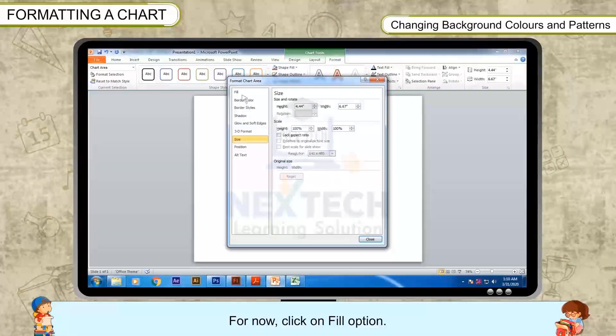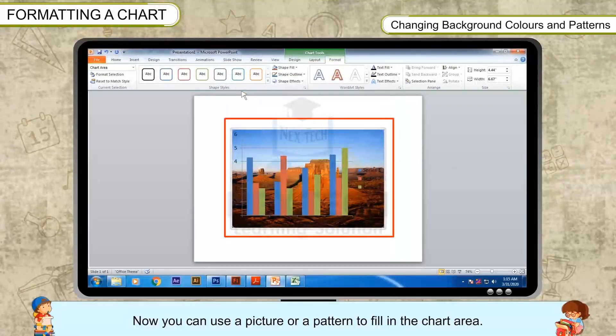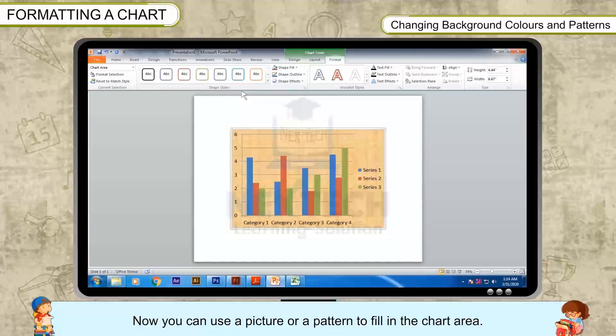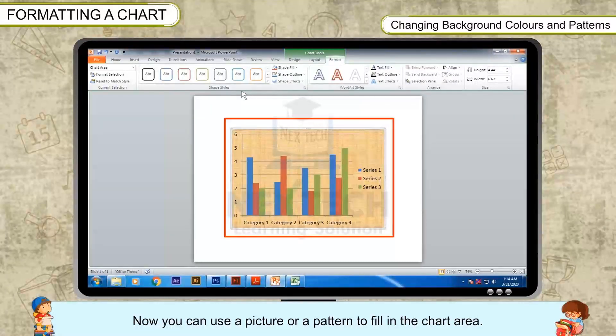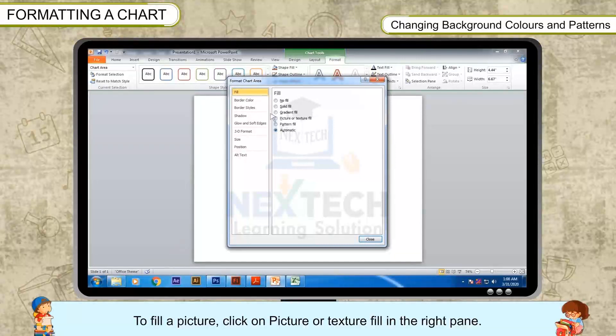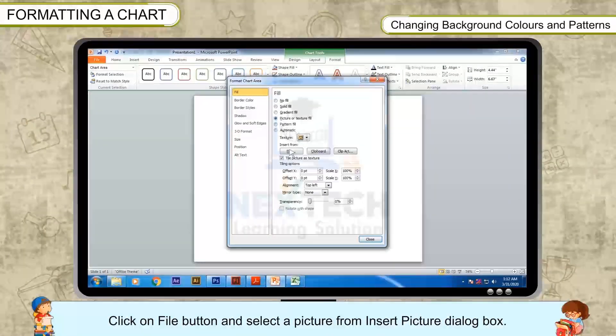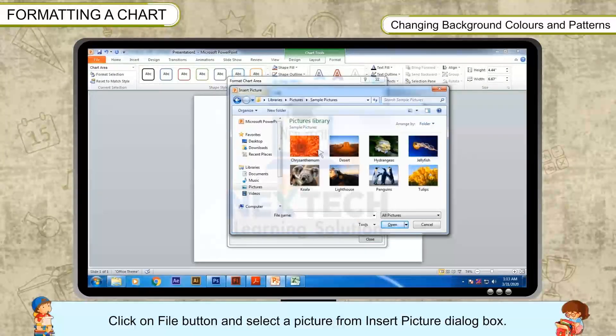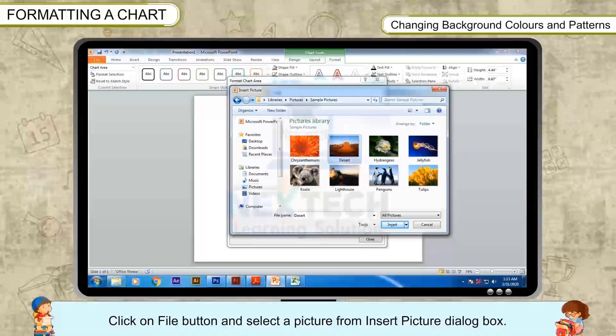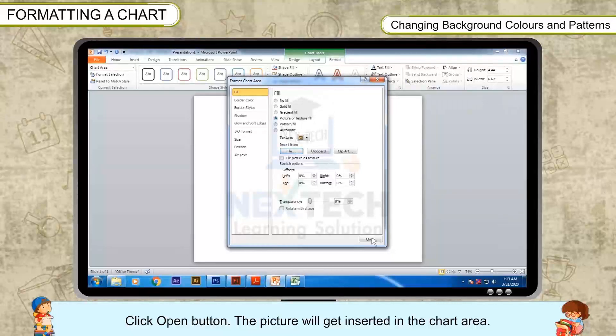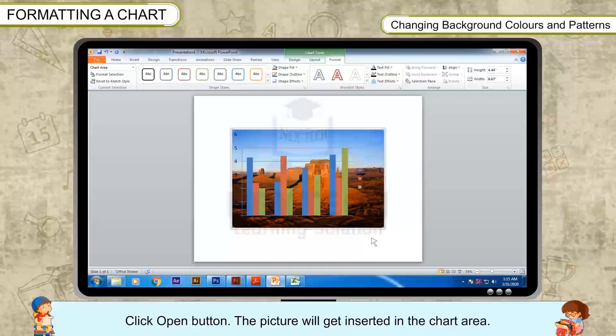For now, click on Fill option. Now you can use a picture or a pattern to fill in the chart area. To fill a picture, click on Picture or Texture Fill in the right pane. Click on File button and select a picture from Insert Picture dialog box. Click Open button. The picture will get inserted in the chart area.